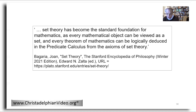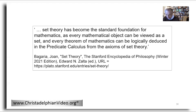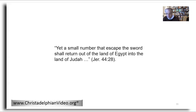Today, mathematicians regard set theory as being at the foundation of mathematics. As this definition from the Stanford Encyclopedia of Philosophy says, set theory has become the standard foundation for mathematics, as every mathematical object can be viewed as a set, and every theorem of mathematics can be logically deduced in a particular calculus from the axioms of set theory. An example in scripture where a set or group is plainly indicated by a stated number is in Jeremiah 44:28, which says: 'yet a small number that escaped the sword shall return out of the land of Egypt into the land of Judah.' Here, the word 'number' refers to a set or group of people, and the phrase 'a small number' could be replaced with an actual number.